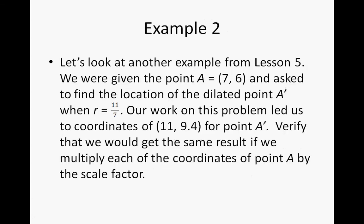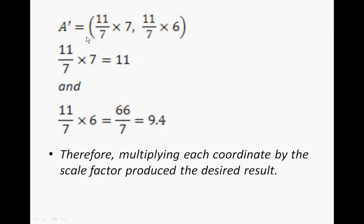Example 2: let's revisit an example from Lesson 5. We were given point A at (7, 6) and asked to find the location of A prime when the scale factor is 11 over 7. Our work led to coordinates of (11, 9.4) for A prime. Verify this by multiplying each coordinate of A by the scale factor: 7 times 11/7 and 6 times 11/7. A prime is exactly (11, 9.4), confirming that multiplying each coordinate by the scale factor produces the desired result.